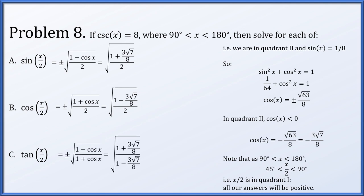For the tangent of x over 2, we can use the half angle formula: plus or minus the square root of 1 minus cosine x over 1 plus cosine x. We pick the positive because we're in quadrant 1, and we have already found that the cosine of x is negative 3 root 7 over 8. All of these could be simplified algebraically if necessary, but the trigonometry part is done.